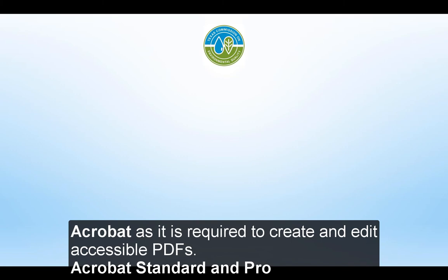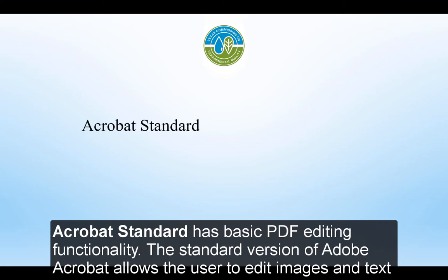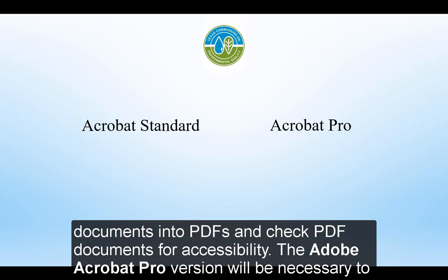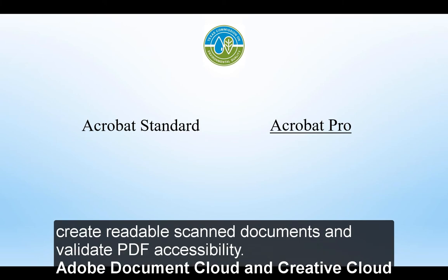Adobe Acrobat Standard has basic PDF editing functionality. The standard version allows the user to edit images and text, as well as create and sign forms. Adobe Acrobat Pro includes the capabilities of Acrobat Standard, but can additionally convert scanned documents into PDFs and check PDF documents for accessibility. Acrobat Pro will be necessary to create readable scanned documents and validate PDF accessibility.